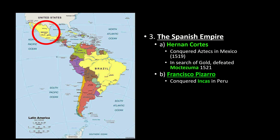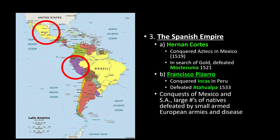Francisco Pizarro did pretty much the same thing. In Peru, he defeated their leader Atahualpa in 1533. The pattern Cortés established was repeated — Pizarro, Cortés, and other conquistadores went through Central America, South America, and parts of North America and conquered. At first there might be some trade between Europeans and Native Americans, but very quickly it developed into warfare. What warfare didn't kill, disease swept away. The conquest of Mexico and South America saw large numbers of Natives defeated by small armed European armies and diseases.